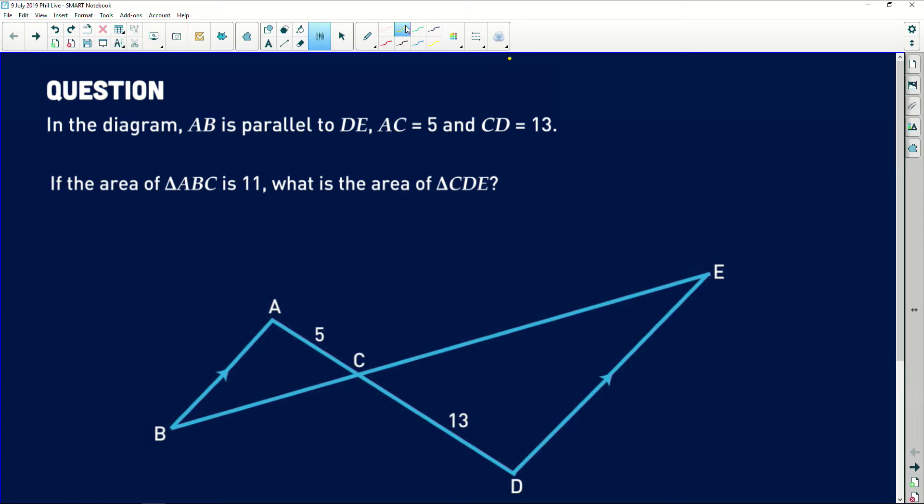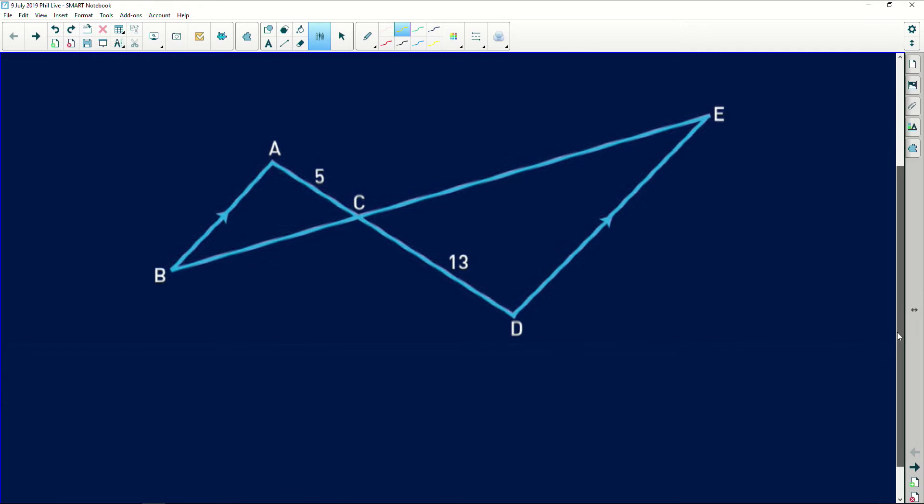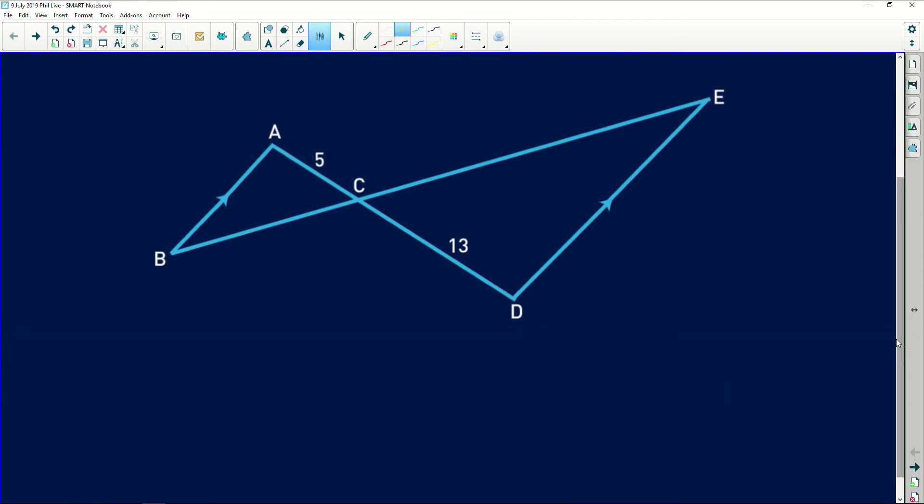It says, in the diagram, AB is parallel to DE. So this line here is parallel to this line here. AC is equal to 5 units and CD is equal to 13 units. If the area of triangle ABC is 11, what is the area of triangle CDE? Okay, so this is a really great question because it applies your similarity knowledge.